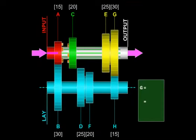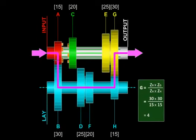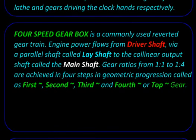Here is an example of a reverted gear train used in automobiles, where the input shaft shown in red and the output shaft shown in gray are collinear. The power flows from the engine to the input shaft, then takes a detour via a gear pair, flowing to the lay shaft and through this gear engagement it comes back to the output shaft.